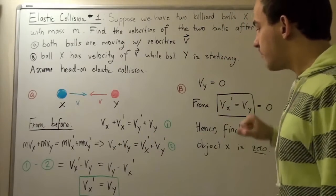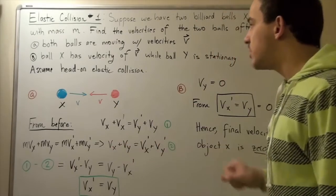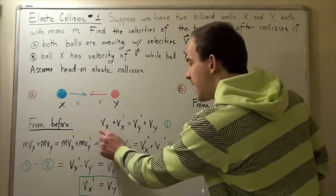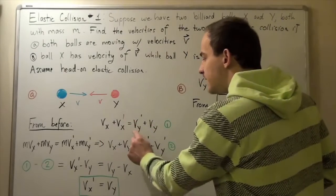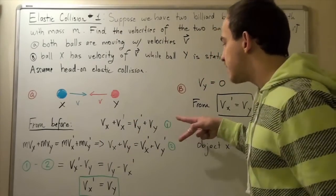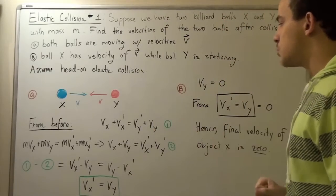Note that now we have two equations (one and two) and we have two unknowns. We know our vx and vy, but we don't know vx' and vy'. Since we have two equations and two unknowns, we can solve for those two unknowns.